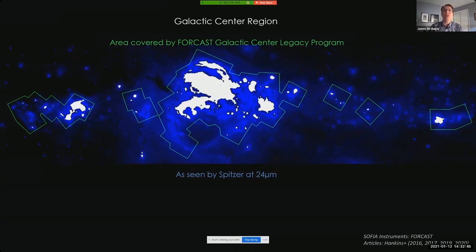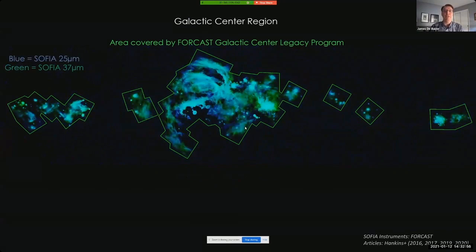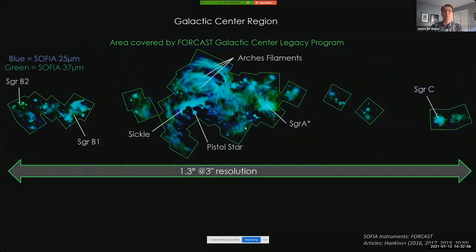Now SOFIA has no saturation issues, and as part of a legacy project we revisited these areas, concentrating on those that were saturated in the Spitzer 24 and 70 micron. Here we see the SOFIA data, which now reveals the beautiful and complex structures that were previously hidden in these areas at these wavelengths.